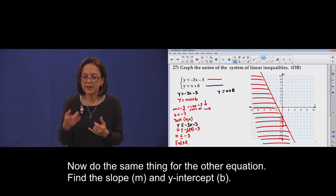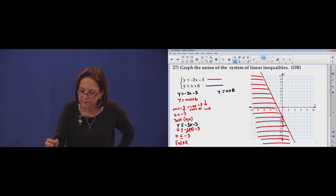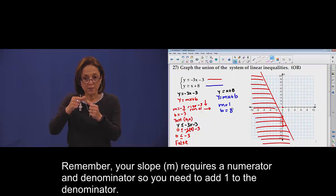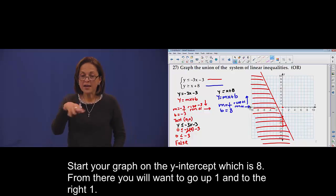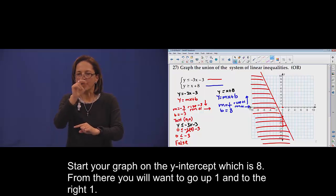Now do the same thing for the other equation. Find m and b. Write down 4 on 2. One up, one right.